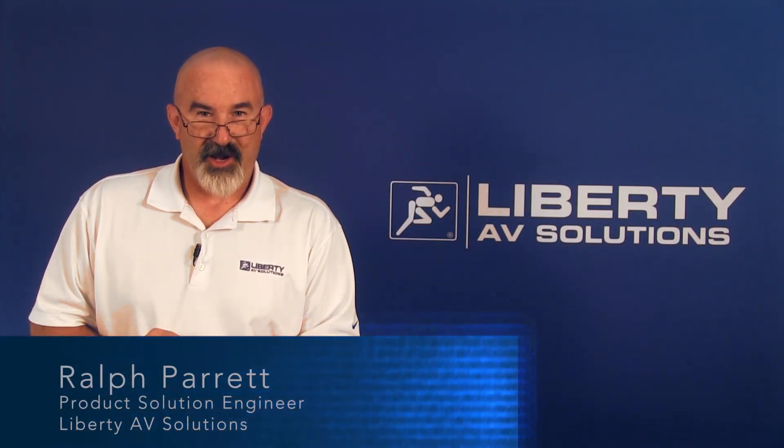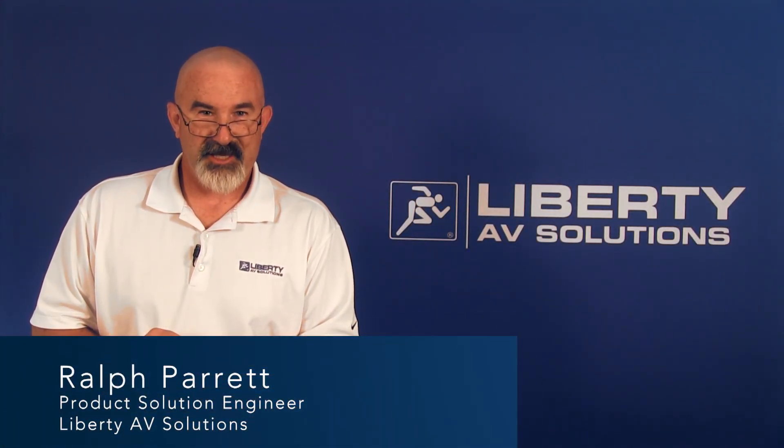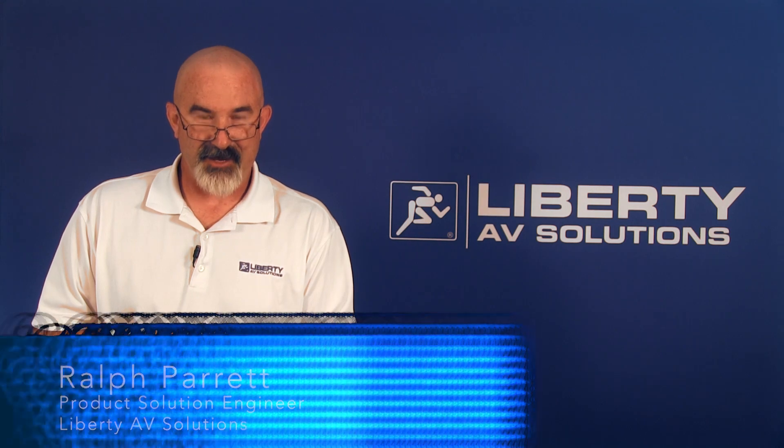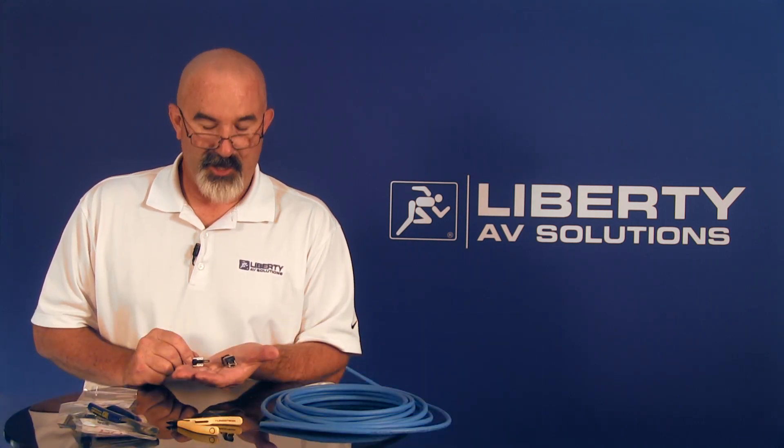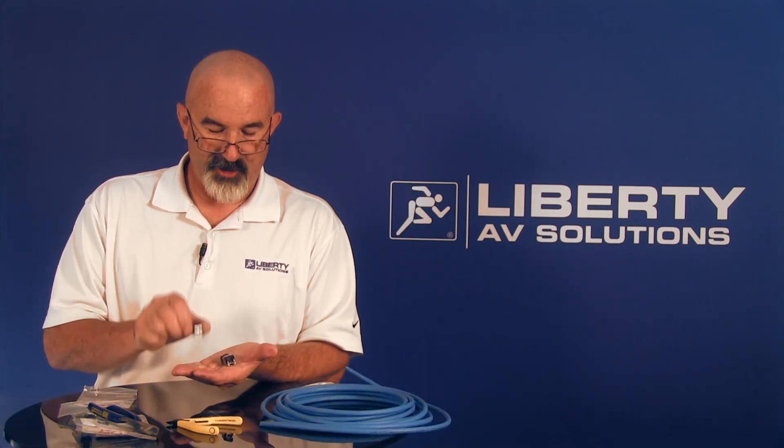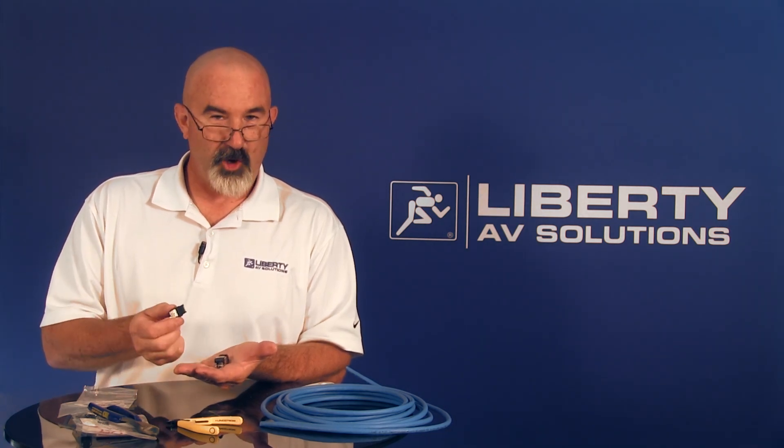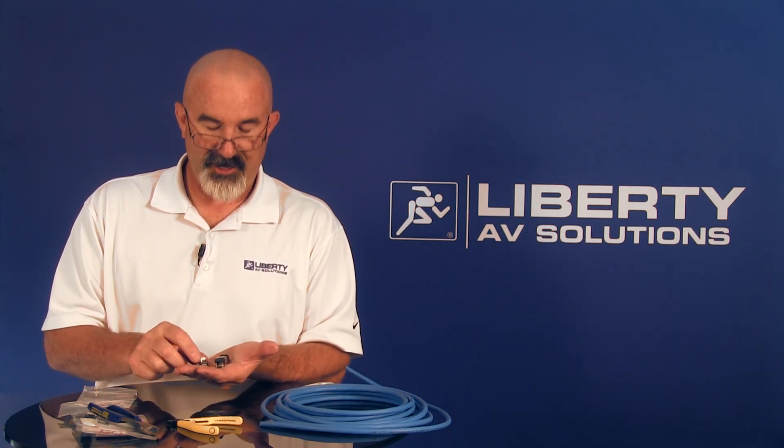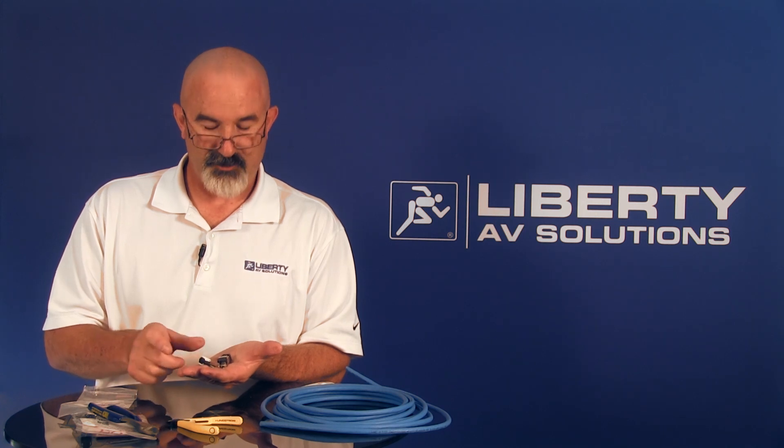Welcome to this product demonstration and training on how to terminate the OCC CAT-6A plug on CAT-7 type cable. The OCC plug is a two-piece connector. You have a load bar and you have the connector body. You load the load bar first with the cables and then you insert it into the connector body.